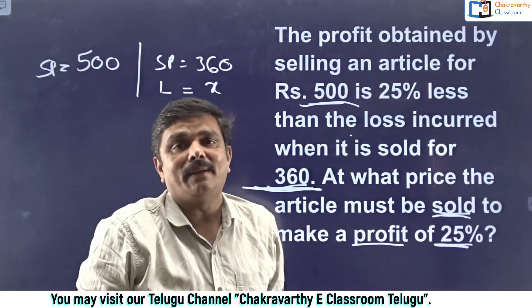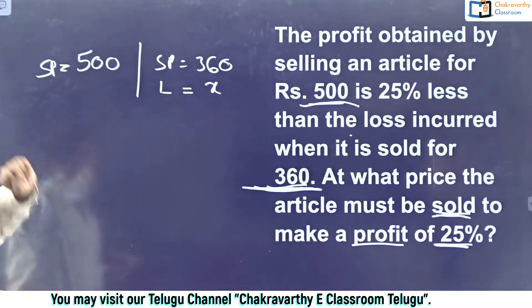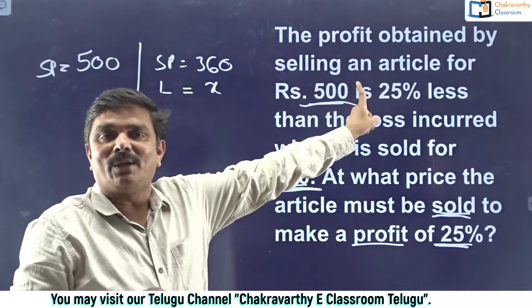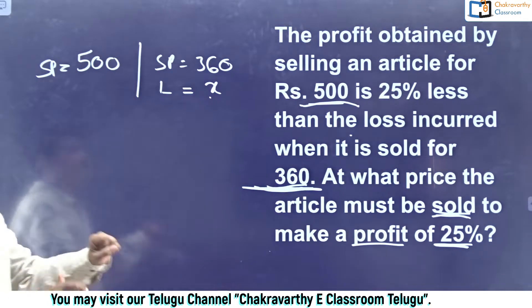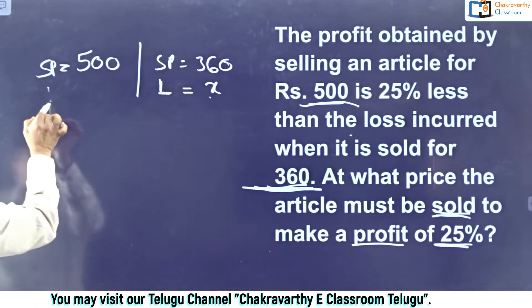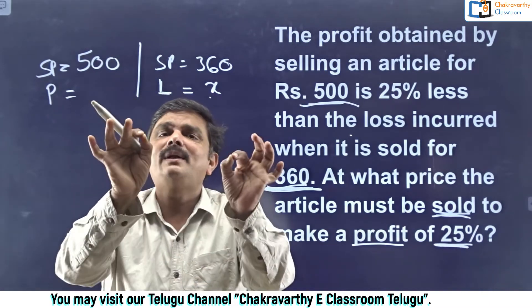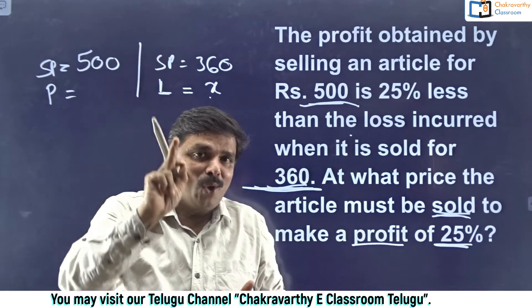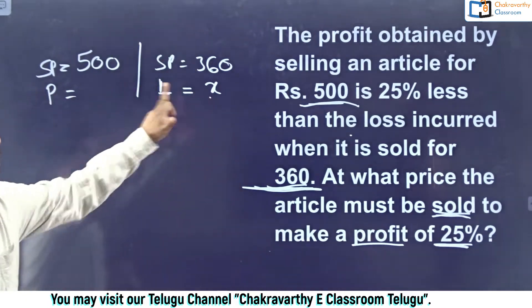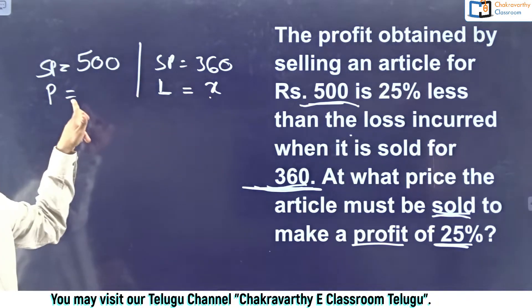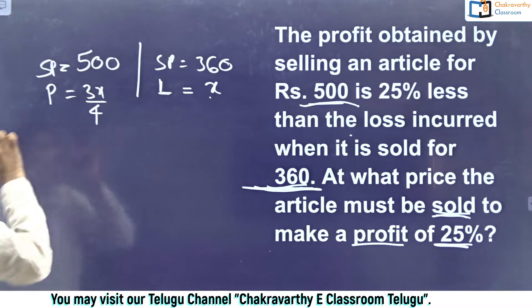They get a loss of x rupees. Based on this loss, I decide the profit. When they sell it for 500, they get a profit which is 25% less than this loss. Here, loss is x, and profit is 25% less than x. 25% means 1/4, and less than that means 4 minus 1 = 3, so it is 3/4 of x. That is, profit = 3x/4.